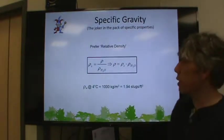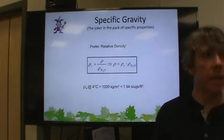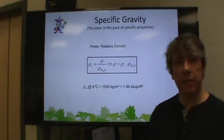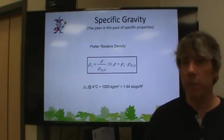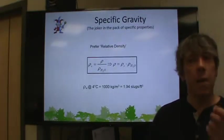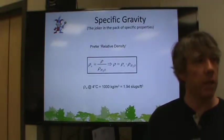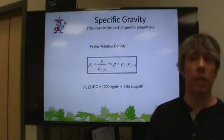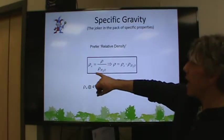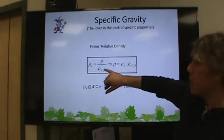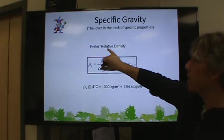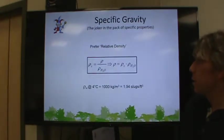There is one more specific property that is kind of like the odd man out. I call it the joker in the pack, and that is specific gravity. Anybody ever heard of specific gravity? Probably heard about it in fluids. Well, specific gravity is not a per unit mass property like all the other specific properties.